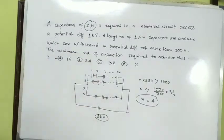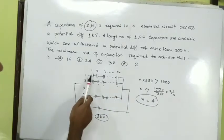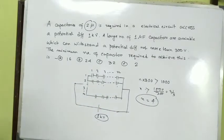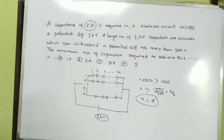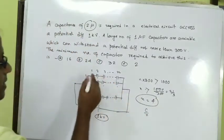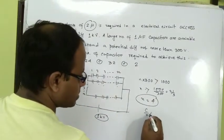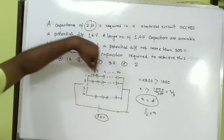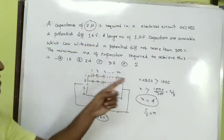For series connection, one by C equivalent equals one by C plus one by C plus one by C, and so on. If we have n capacitors of capacitance C in series, the total capacitance is C divided by n. The equivalent capacitance of n identical capacitors C in series is C by n.